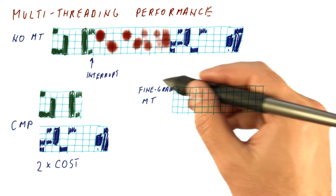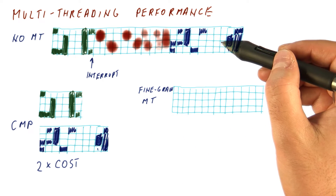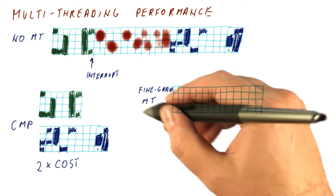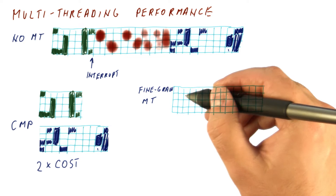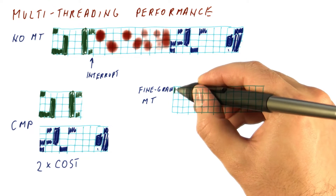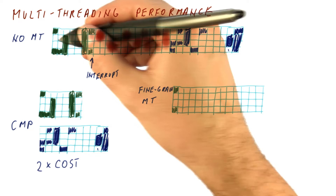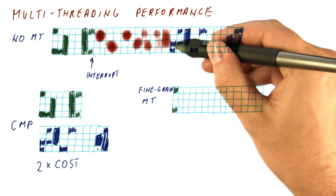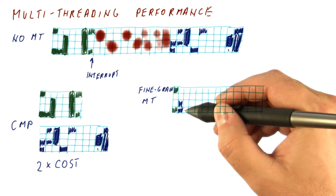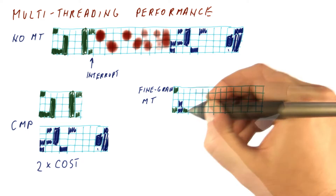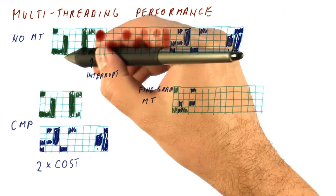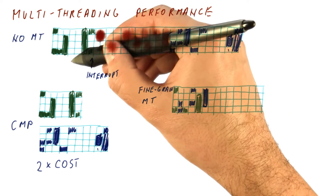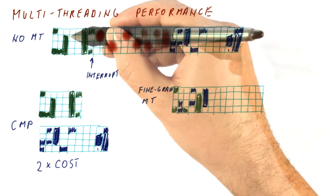With fine-grained multi-threading, we really have one core but with separate sets of registers for each thread and some scheduling logic. Every cycle we can switch between threads. What happens is the green thread gets exactly the same behavior in the first cycle; in the second cycle we run the blue thread. Then we do some work from the green thread again, then from the blue thread — alternating each cycle between threads.